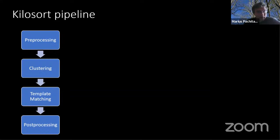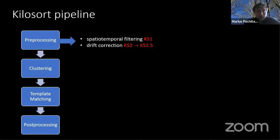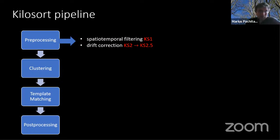Here's an overview of what's happening under the hood as Kilosort analyzes data. There's a pre-processing step with two big parts: first, spatiotemporal filtering, which has been there from the beginning and is well established; and second, drift correction, which is a more recent development in Kilosort 2, 2.5, and 3. Drift correction is one of the most important things to do if we want almost fully automated spike sorting, and I will talk about it in quite some detail.